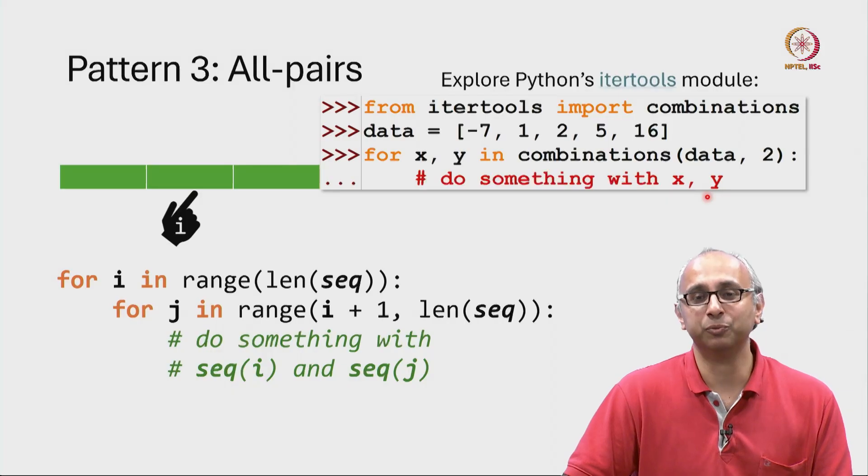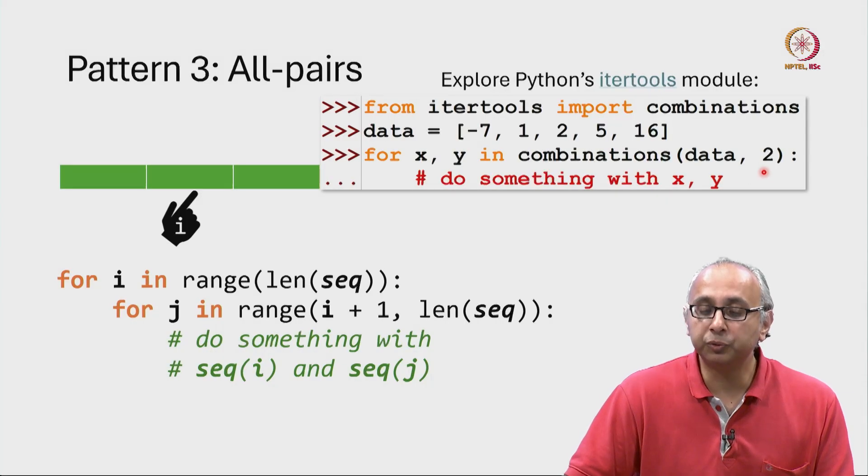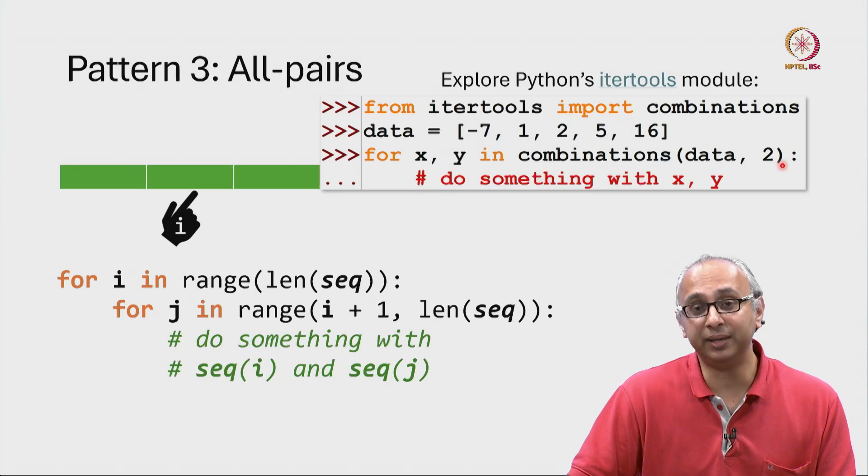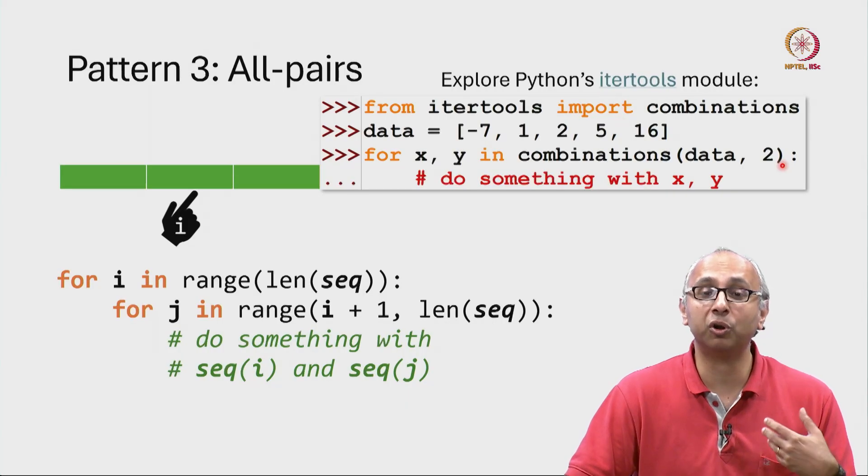Now if you want to look at triples of items, you simply say for x, y, z in combinations data, 3 and then it will produce all triples.